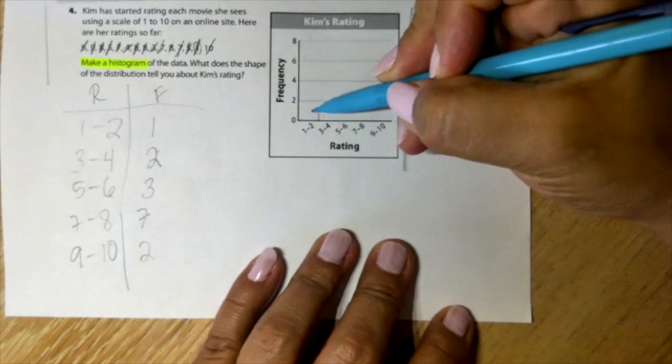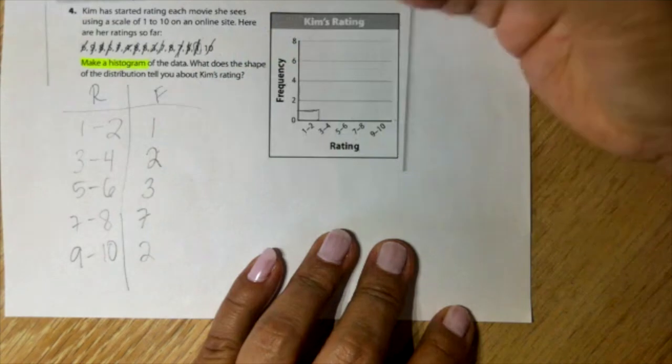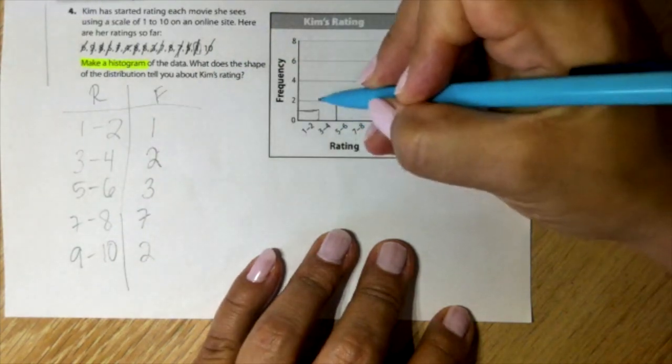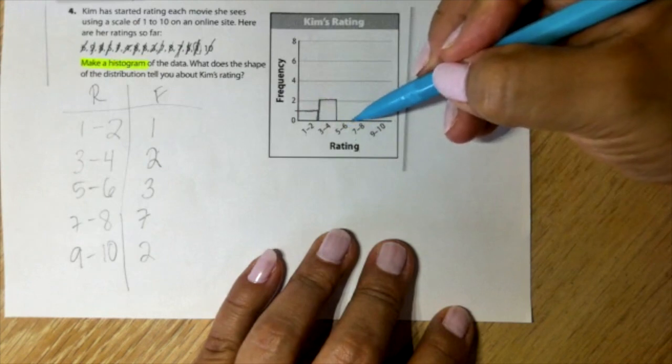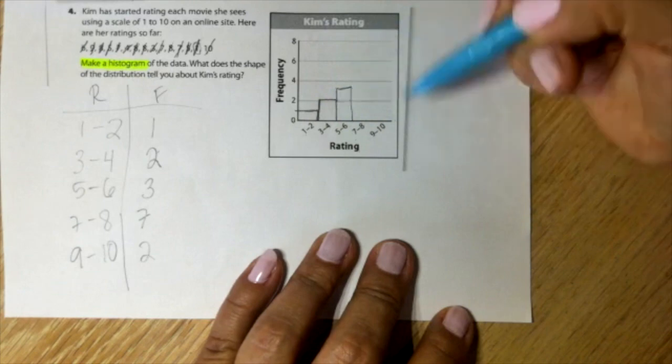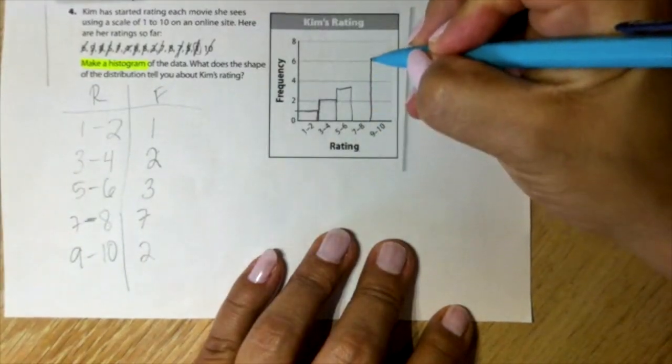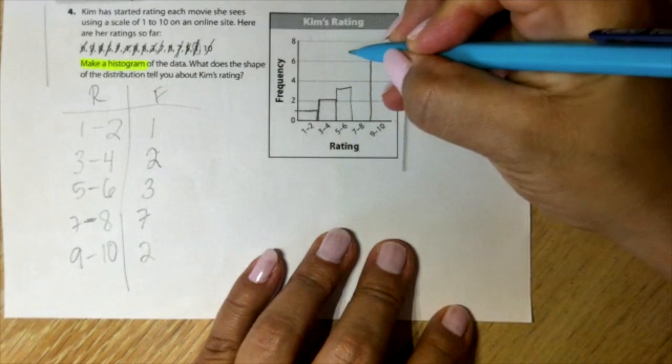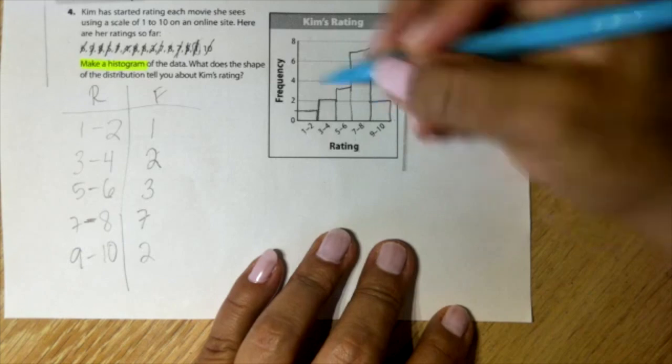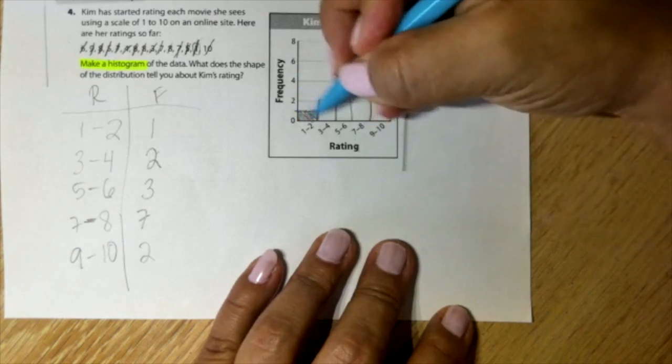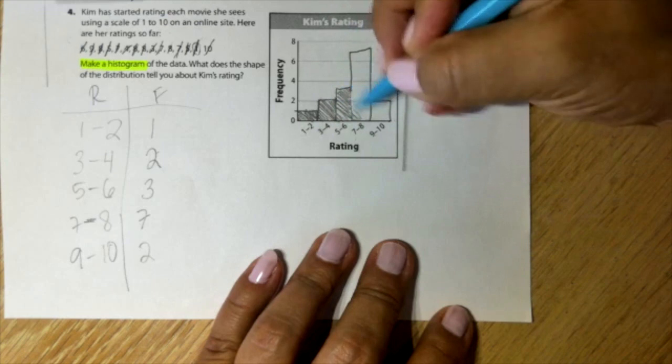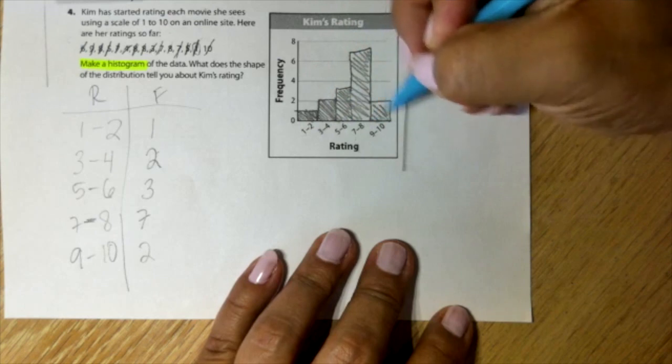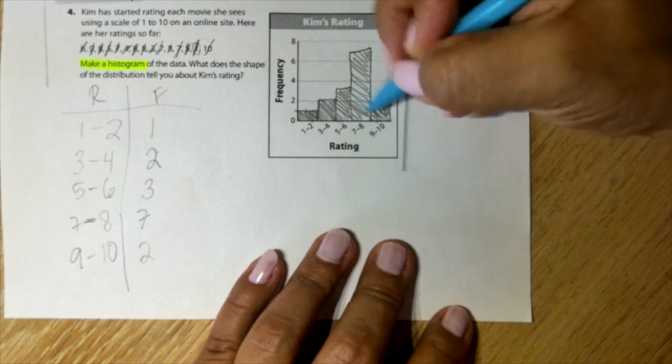Up to 1. The next one from 3 to 4, I'm going to go up to 2. You see how they don't have space in between? From 5 to 6, I'm going to go up to 3. Seven through 8, go up to 7. And the second one is 2. This is how you create that histogram, which is the bar graph with no space in between, no gaps.